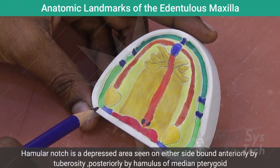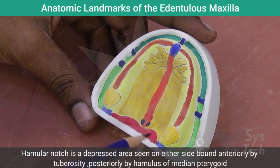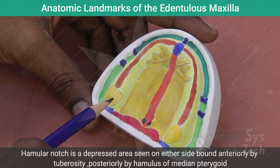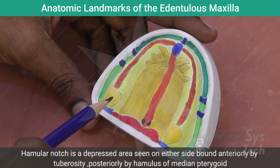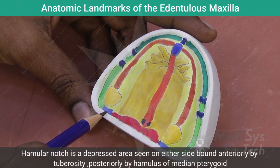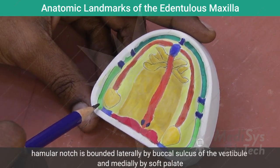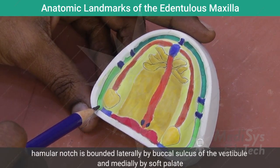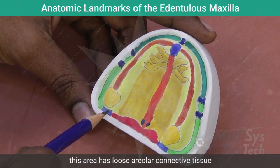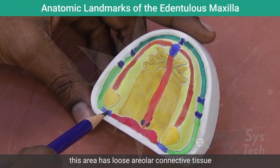The hamular notch is a depressed area seen on either side, bound anteriorly by the maxillary tuberosity, posteriorly by the hamulus of the median pterygoid plate, laterally by the buccal sulcus of the vestibule, and medially by the soft palate. This area has soft loose areolar tissue beneath.